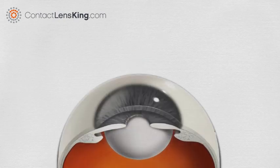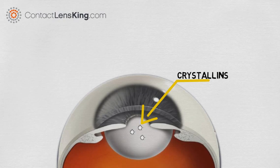Lens cells contain large amounts of proteins called crystallins. Many factors can impact the structure of these proteins, causing them to clump together and obstruct vision.